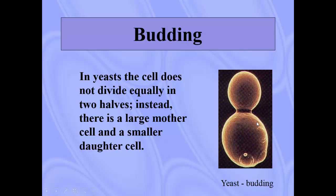Just so you don't get confused between budding and binary fission: binary fission produces two equal halves, whereas budding is a parent with a small offspring coming out of it.